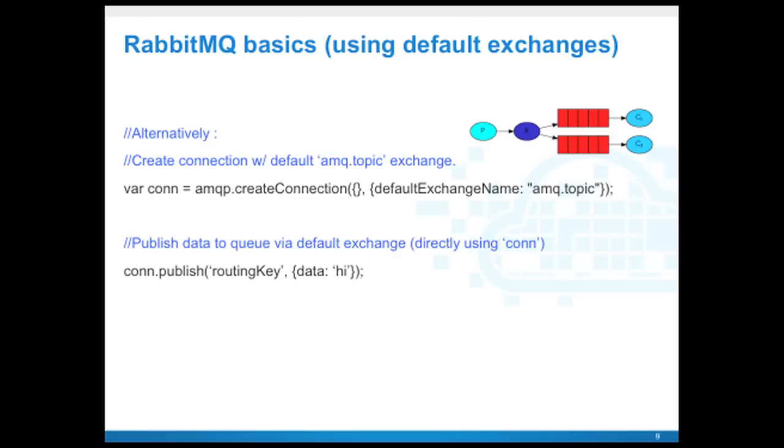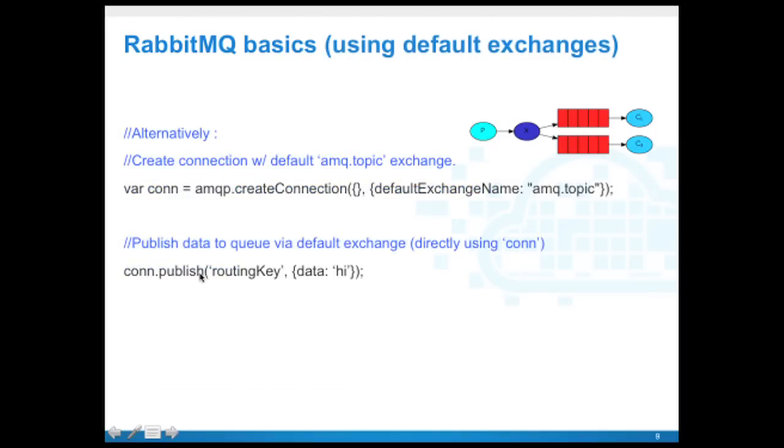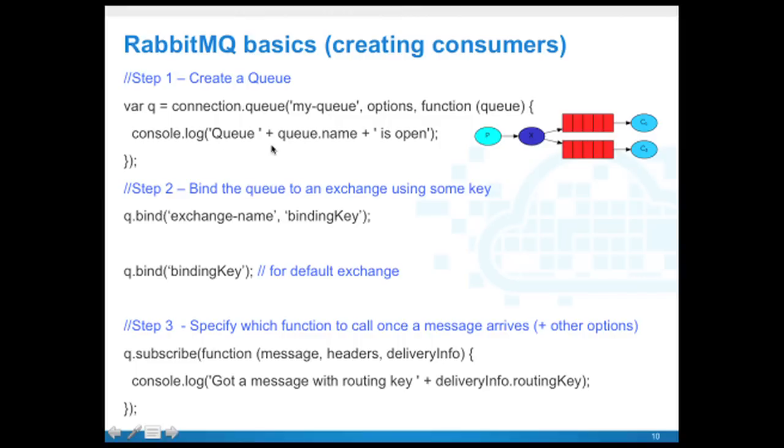Going back again, there's another way you can create the same publishers. You can create a connection and while creating a connection specify that you're going to use a default exchange like amq.topic. If you're using a default exchange, then you don't need to say exchange.publish but instead you can say connection.publish directly.